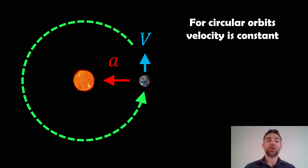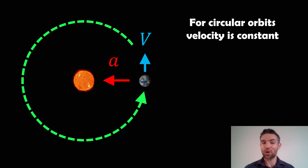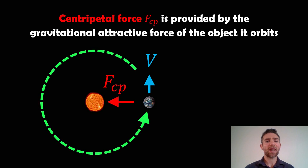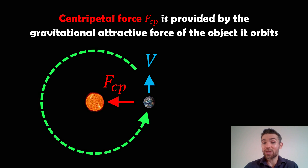In this setup here, your orbital velocity is perpendicular to the gravitational acceleration, which would be towards the larger object. The example I've given here is Earth orbiting the Sun. Now in this setup, for a circular orbit, your centripetal force is going to be provided by your gravitational attractive force of the object that it orbits.